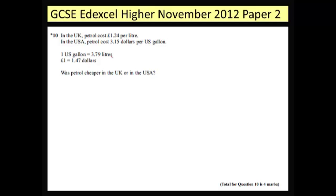It's given us some conversion rates here. One gallon is 3.79 litres and a pound is $1.47.